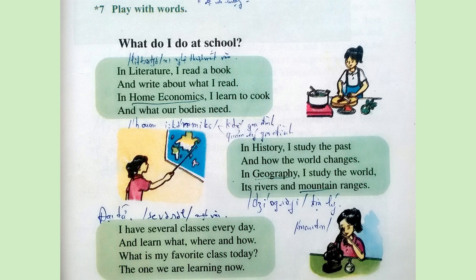Play with words. What do I do at school? In literature, I read a book and write about what I read. In home economics, I learn to cook and what our bodies need. In history, I study the past and how the world changes. In geography, I study the world, its rivers and mountain ranges. I have several classes every day, and learn what, where, and how. What is my favorite class today? The one we are learning now.